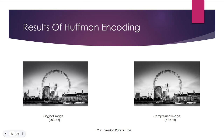It is worth noting that certain types of images or data may not benefit as much from this type of compression, and other methods or algorithms may be more suitable. In conclusion, the effectiveness of Huffman coding for image compression depends on the nature of the image data. While it demonstrated notable compression for the first image, the second image exhibited a more modest reduction in size. Further exploration with alternative compression techniques could be considered to optimize performance for different types of images.